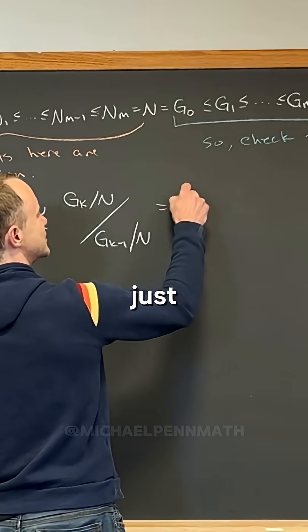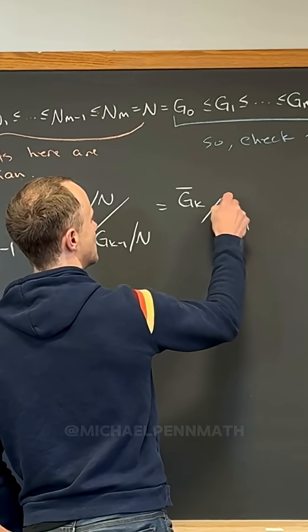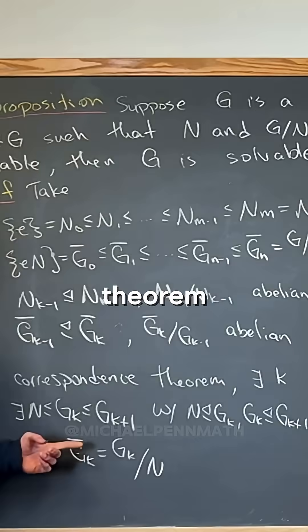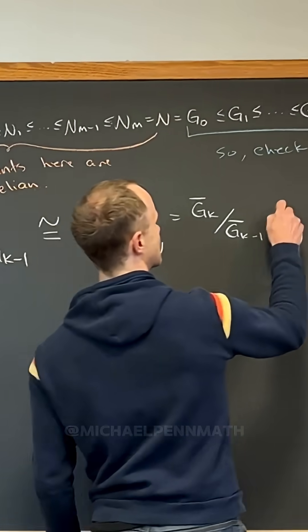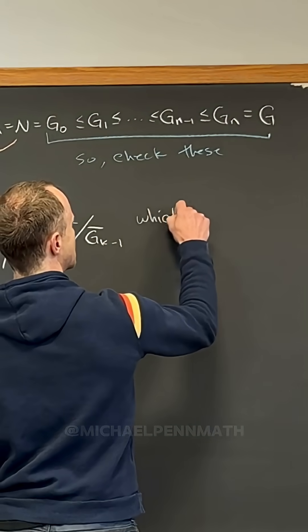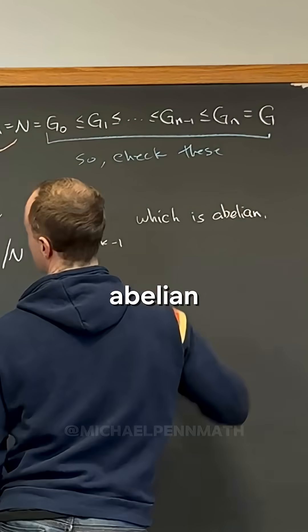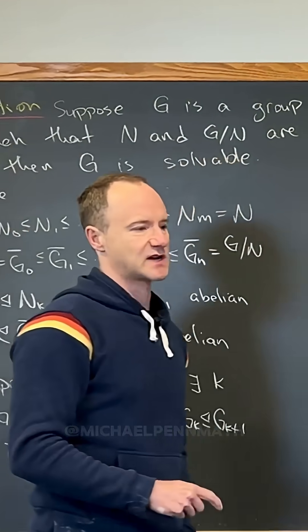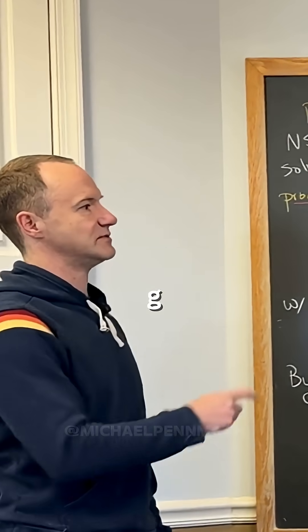But now this is just gk bar mod gk-1 bar, right, by the correspondence theorem. But this is abelian, which is abelian by our construction of the subnormal series—composition series, whatever you want to call it—of g mod n.